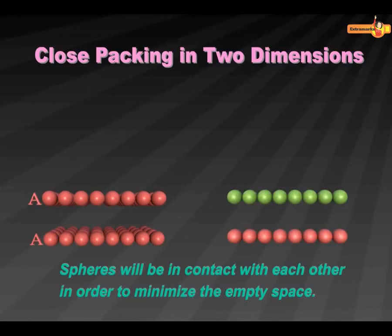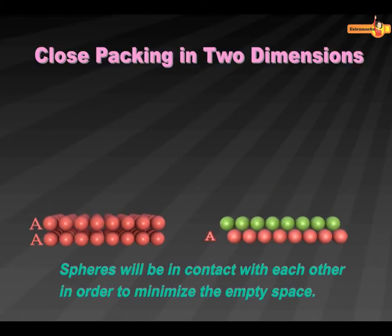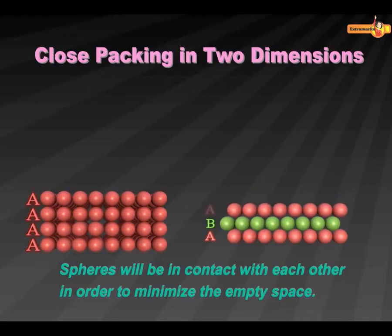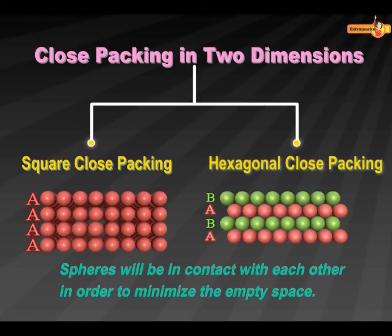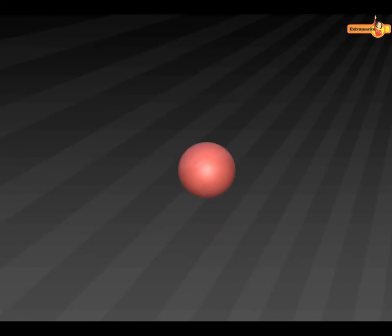Stacking of another row can be done in two ways, which leads to two different types of close packing: square close packing and hexagonal close packing.